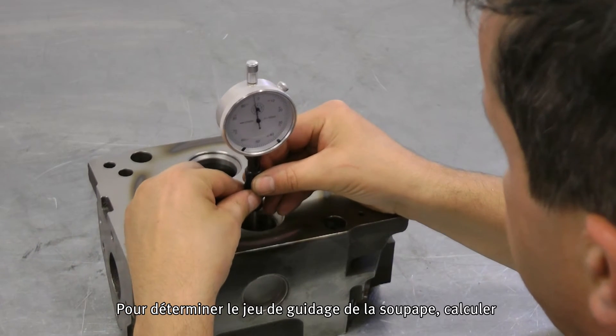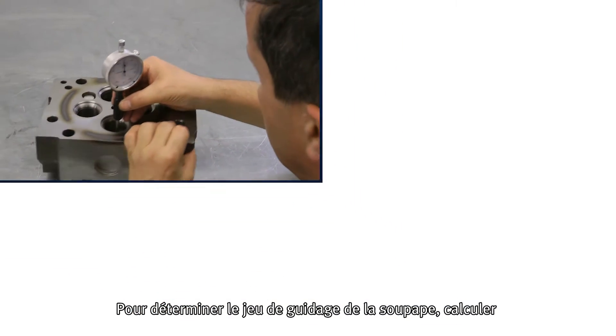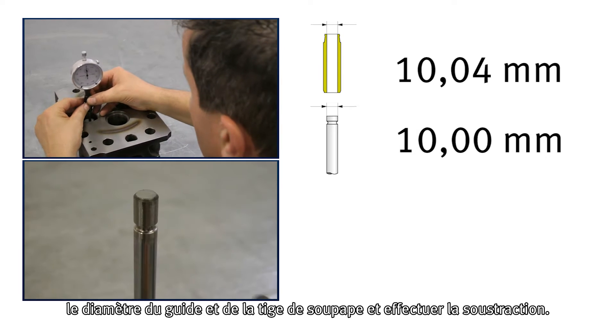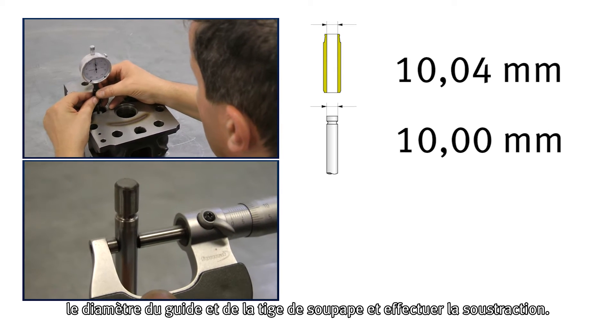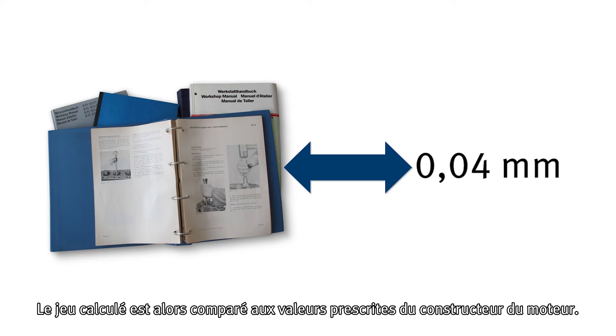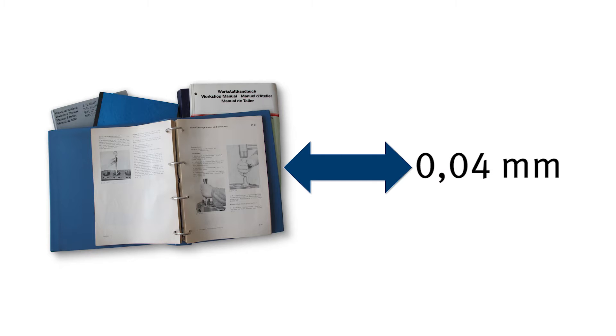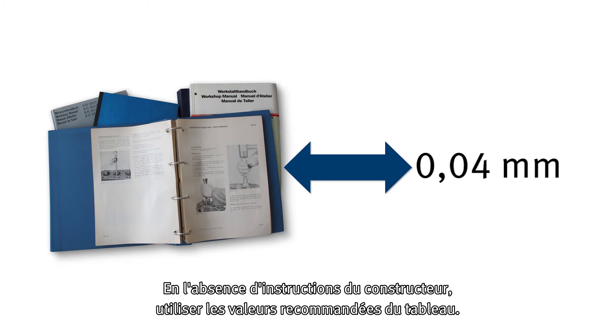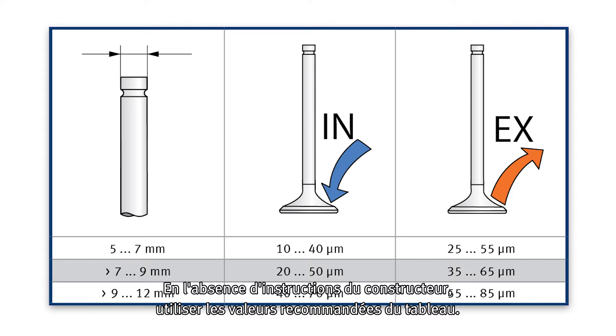To determine the valve guide clearance, the diameters of valve guide and valve stem are determined and deducted from each other. Their determined clearance is compared to the nominal values of the engine manufacturer. If no manufacturer information is available, the guide values from the table can be used.